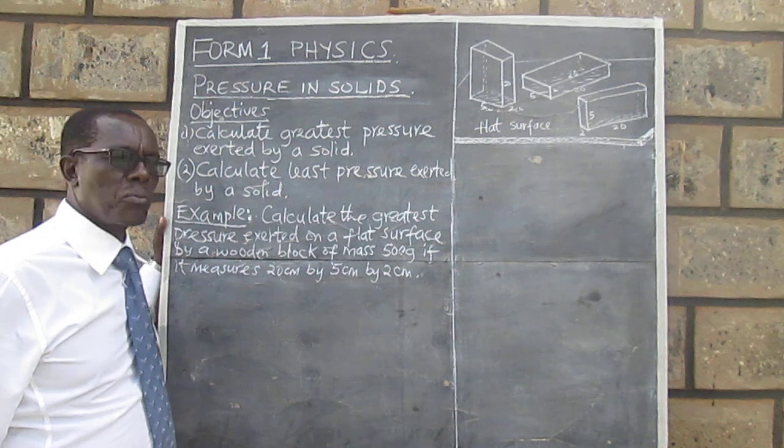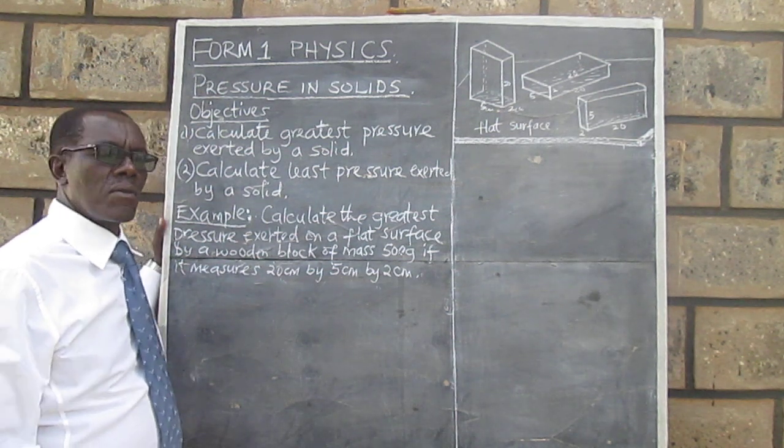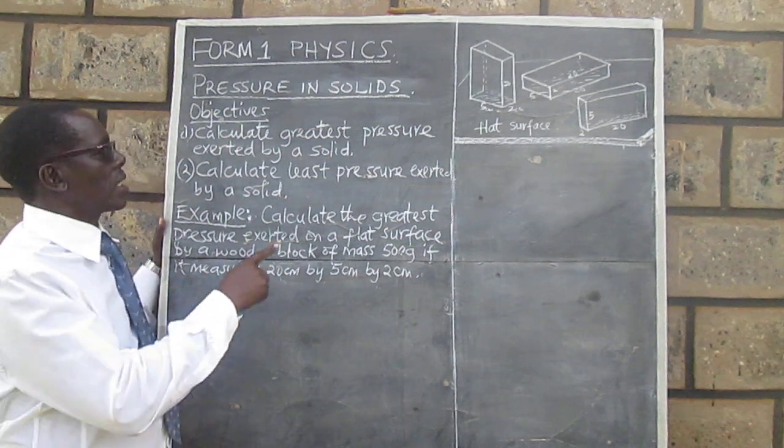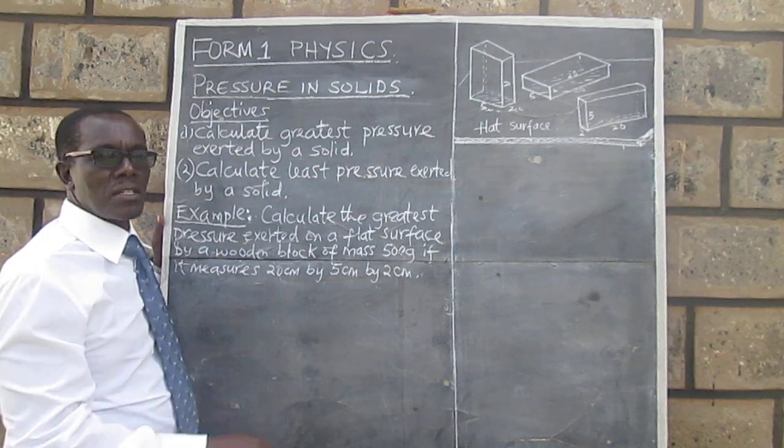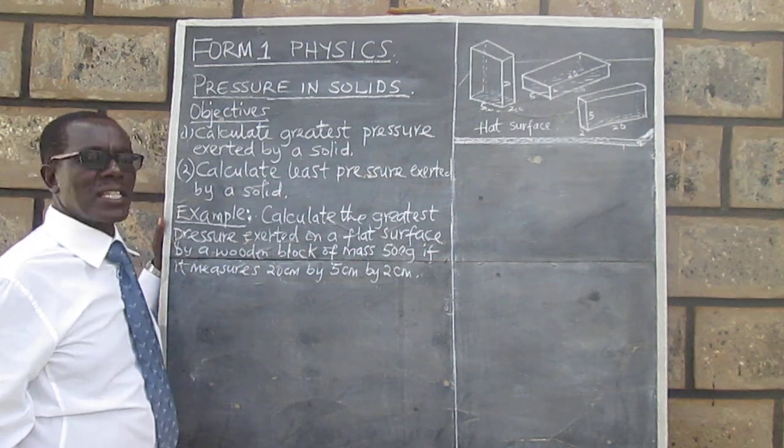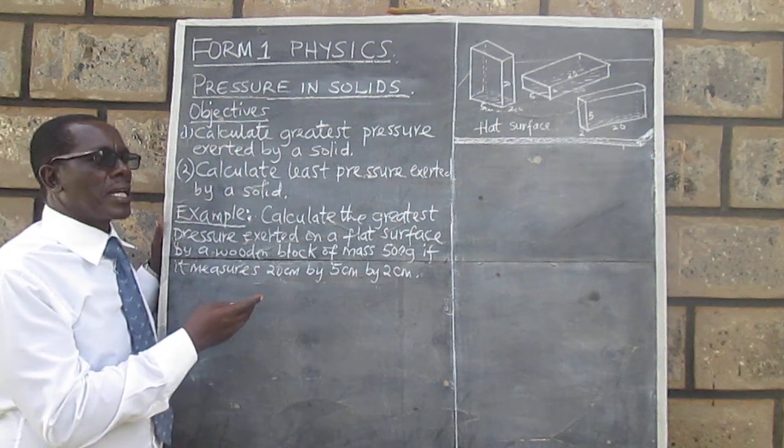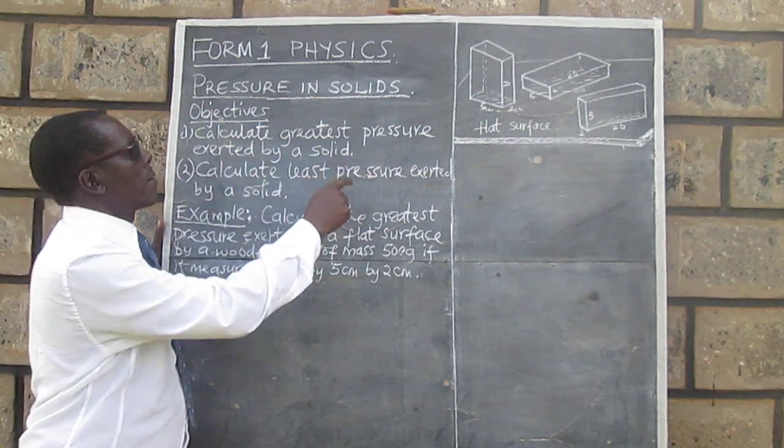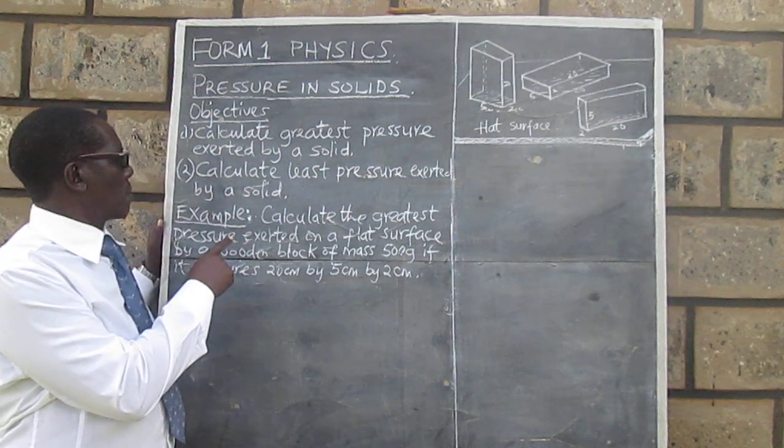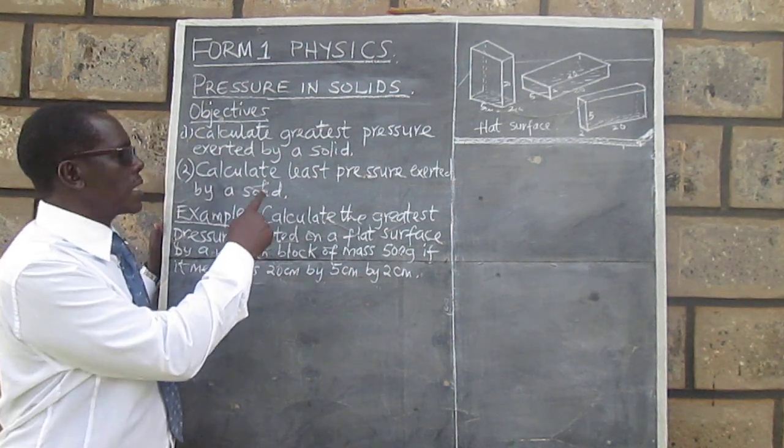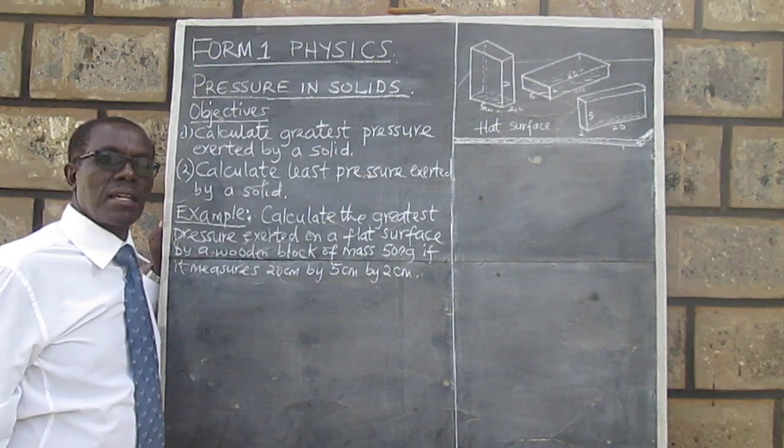Hi there, welcome to my physics class. In our lesson today we are going to look at a topic in Form 1 physics: pressure in solids. In particular, we are going to look at how to calculate the greatest pressure exerted by a solid, and also see how we can get the least pressure exerted by a solid.